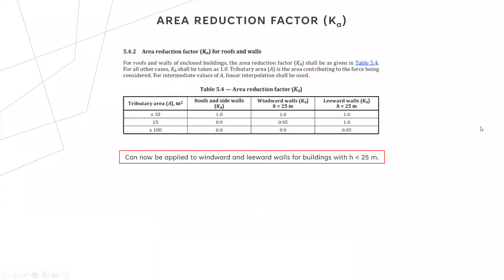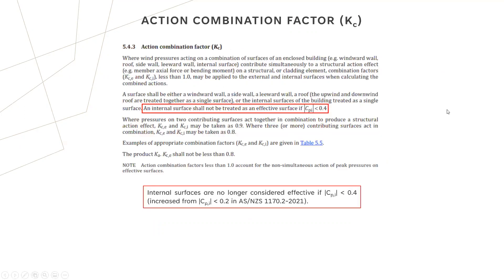The area reduction factor, which previously was only relevant for roofs and sidewalls, can now be applied to windward and leeward walls as well, although the factors are a little different, and only for buildings under 25 metres. The area action combination factor: internal surfaces are no longer considered effective if the absolute value of C_pi is less than 0.4 — it used to be 0.2 in 2011.